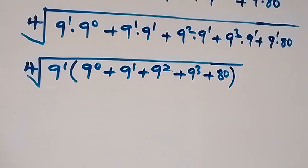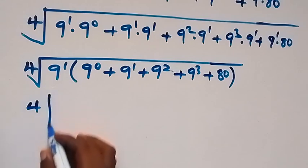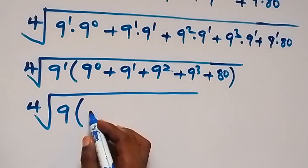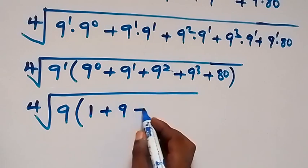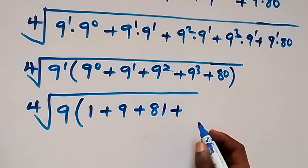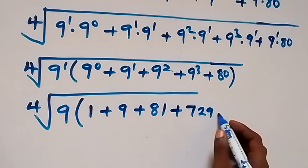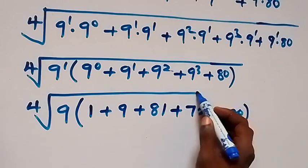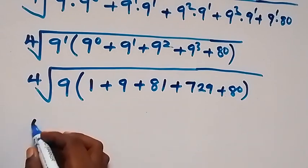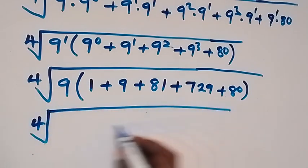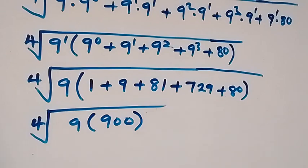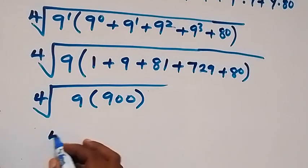When we simplify further, this gives us the fourth root of 9 raised to power 1 — same as 9 — times the bracket: 9 raised to power 0 is 1, plus 9 raised to power 1 is 9, plus 81, plus 729, plus 80. When we multiply this out we get 8100, so we have the fourth root of 8100.